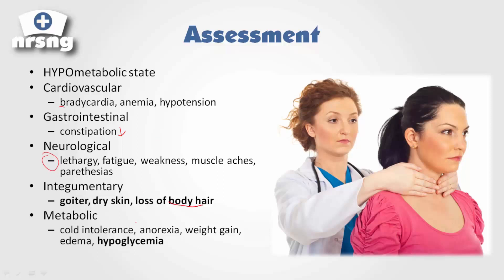The patient's going to gain weight, have anorexia, cold intolerance, edema, and hypoglycemia — just an ultra-decline in metabolic process. The way we assess it, we're going to assess right here over the trachea, ask the patient to swallow, turn their head, and that's how we're going to assess for the location and size of the thyroid gland.